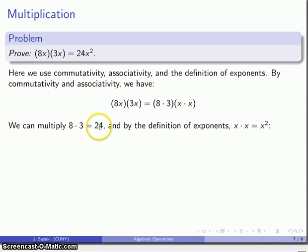8 times 3 is 24. And the definition of exponents, x times x, is by definition x multiplied by itself twice. So this expression here can be rewritten as 24 times x squared.